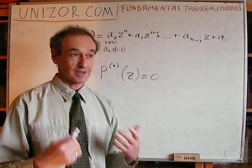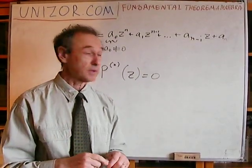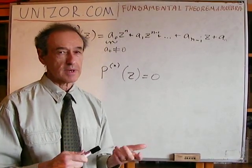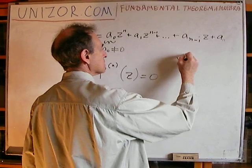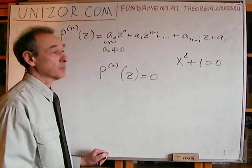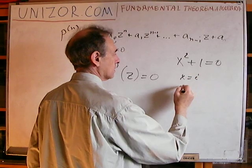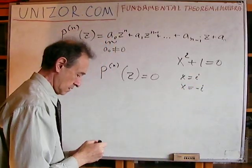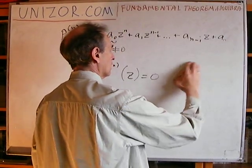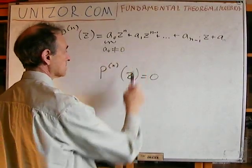First of all, it's very easy to remember: any polynomial has at least one complex solution. Why am I emphasizing complex? Well, for obvious reason — for example, x² + 1 = 0 has no solution among real numbers, but there is a solution among complex numbers: x equals i and x equals minus i. So any polynomial has a root. The solution of this particular equation is called a root — it has at least one root.